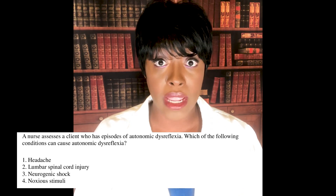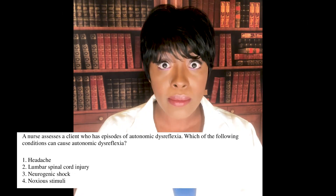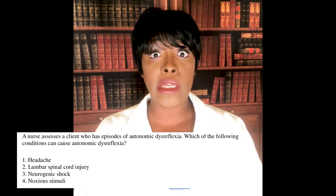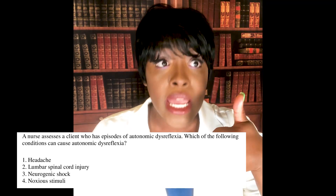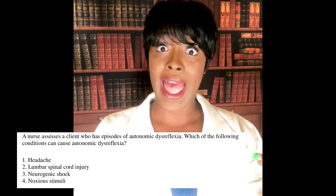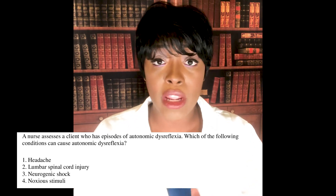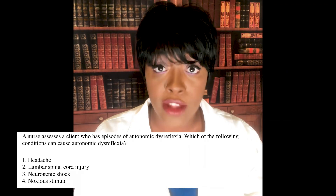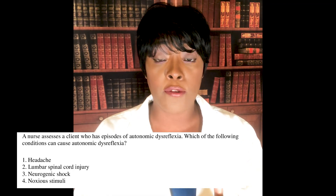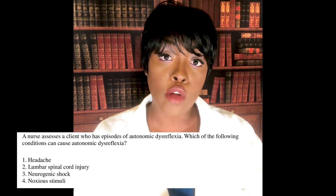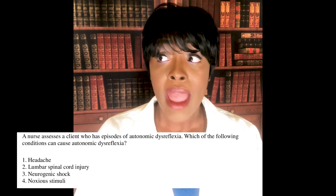The correct answer is four — noxious stimuli. When I say noxious stimuli, I mean anything that annoys that patient's body. It could be a wrinkle in the bed, a pinprick, a full bladder, or constipation. That's why for these patients we make sure to place a urinary catheter, ensure they get lots of fiber, and ensure they're not constipated — because all of those things can cause autonomic dysreflexia.